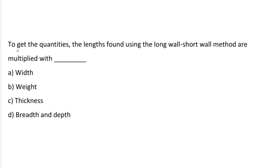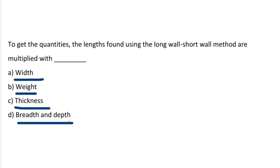Next question: to get the quantities, the length found using the long wall, short wall method is multiplied with — Option A: Weight. Option B: Thickness. Option C: Breadth and depth. The correct answer is option D, Breadth and depth.